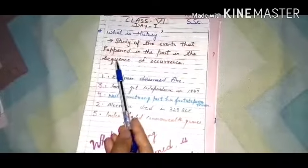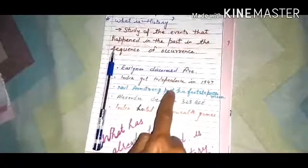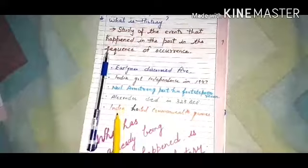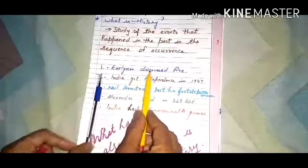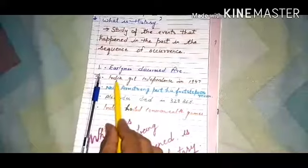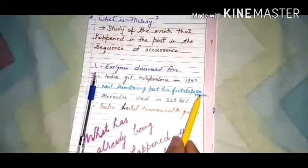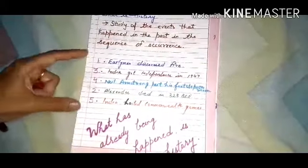To help you understand the sequence of occurrence, here are some points. Early men discovered fire. India got independence in 1947. Neil Armstrong put his footsteps on the moon — that is 1969. Alexander died in 323 BCE. India hosted the Commonwealth Games in 2010. Arranged in sequence: first early men discovered fire, then Alexander died in 323 BCE, then India got independence in 1947, then Neil Armstrong on the moon in 1969, and then India hosted the Commonwealth Games in 2010. This is the sequence of occurrence.